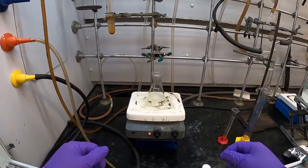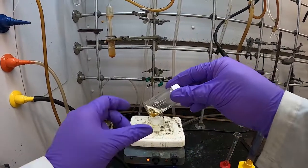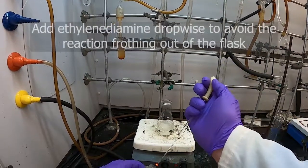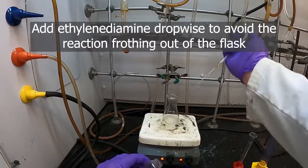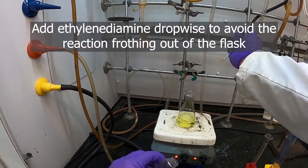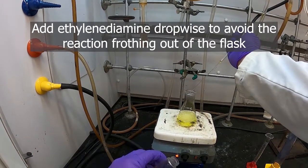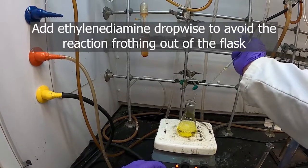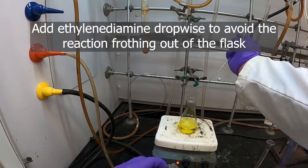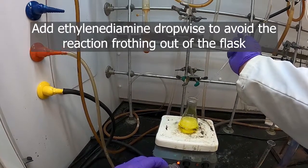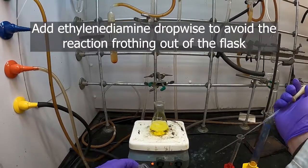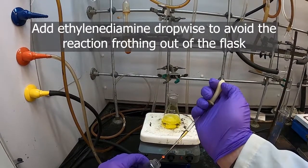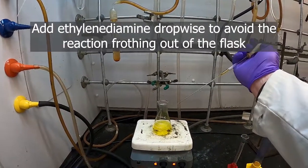So our ethanol has reached a boil, so now we're going to add our one gram of ethylene diamine here, very slowly so that we don't have it foam over. Nice yellow color.